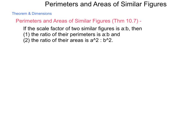This one states, if the scale factor of two similar figures is a to b, then one, the ratio of their perimeters is a to b, and two, the ratio of their areas is a squared to b squared.